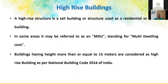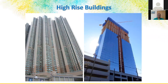A high-rise building is a tall building — we have different categories: high-rise, tall, or skyscrapers. We have a separate code for tall buildings, IS 16700, which is applicable up to 250 meters. As per the National Building Code, any building beyond 15 meters high comes under high-rise buildings, and if it is residential it is also referred to as multi-dwelling units.